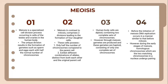Meiosis is a specialised cell division process occurring in cells of the testes and ovaries in the human body. These unique divisions result in the formation of gametes such as sperm and egg, each with half the normal number of chromosomes. In contrast to mitosis, meiosis comprises two divisions leading to the formation of four daughter cells, which possess only half the number of chromosomes compared to the parent cells.